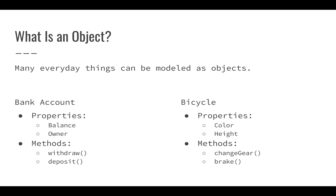A property is just something that describes an object — something we can use to say this is the way it is. For example, a bank account is going to have a balance and an owner; those are properties. We can think of a numeric value for the balance, and also who owns that account. For a bicycle, we could think of properties like color, style, height, and what kind of bicycle it is.